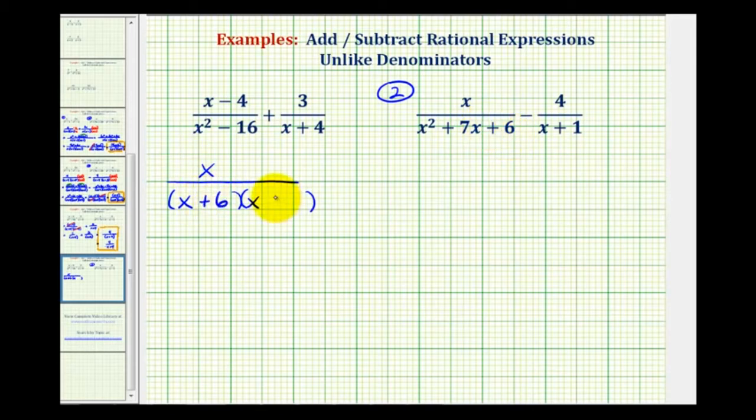So we have x plus six here and x plus one here. We'll leave some space, minus four over a factor of x plus one.